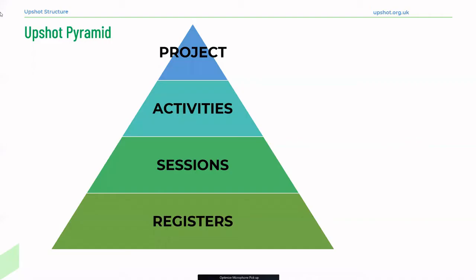First I wanted to share with you a simple structure that can help — and has been found really useful for new users particularly — to understand the structure of Upshot and how to navigate through the system, being clear on the terms that we use. You'll see on the screen we've got a pyramid. If you think about the structure of Upshot as that pyramid, you have a project at the top. Organisations can have several projects; for instance one project might be around employment.